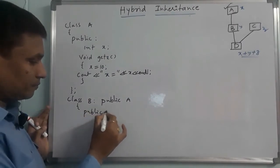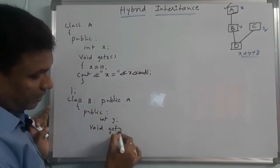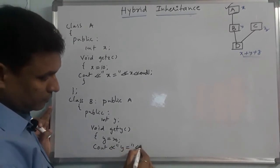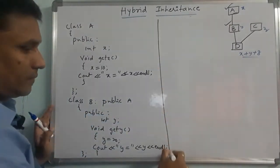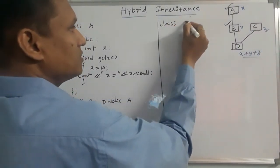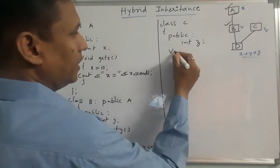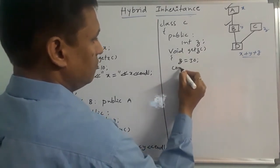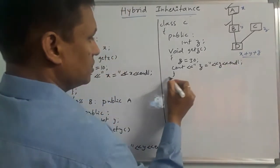Class B has a public data member y and a member function get y. The value y is set to 20, and we display y using cout. Then function close and class close. Next we define class C, which is a base class, with public data member z.